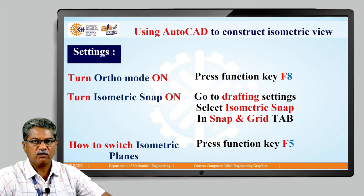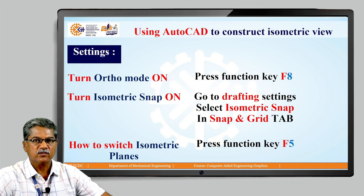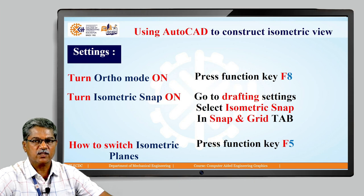Isometric snap is available in the drafting settings. Within drafting settings, I have a snap and grid tab, and within that, there is an option which says isometric snap. I will be demonstrating it in a few minutes. Once we are within the isometric snap we are free to draw lines. I have three planes for isometric views: a front plane, a left or right plane, and a top plane. I need to switch between planes using function key F5.